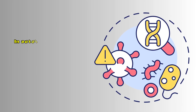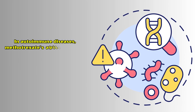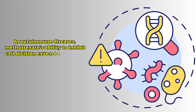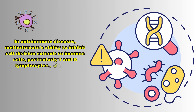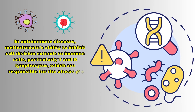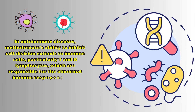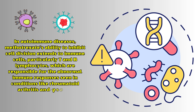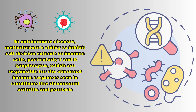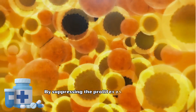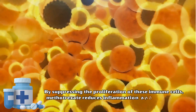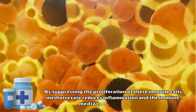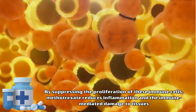In autoimmune diseases, methotrexate's ability to inhibit cell division extends to immune cells, particularly T and B lymphocytes, which are responsible for the abnormal immune responses seen in conditions like rheumatoid arthritis and psoriasis. By suppressing the proliferation of these immune cells, methotrexate reduces inflammation and the immune-mediated damage to tissues.